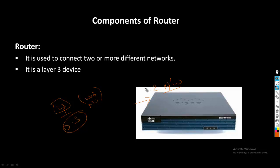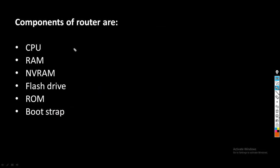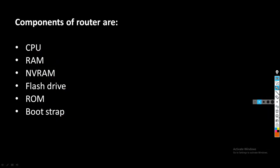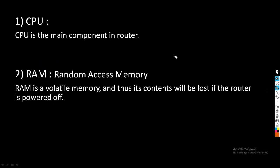Now we will be discussing about the components of router. The main components of router are: CPU, RAM, NVRAM, flash drive, ROM, and bootstrap. We will be discussing about each component of router in detail.